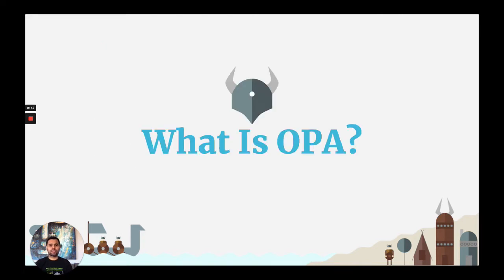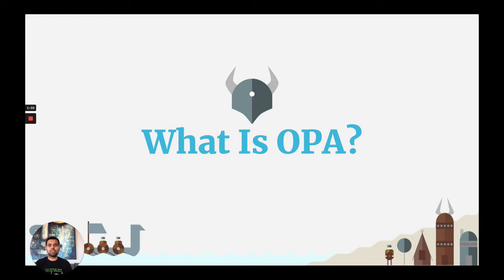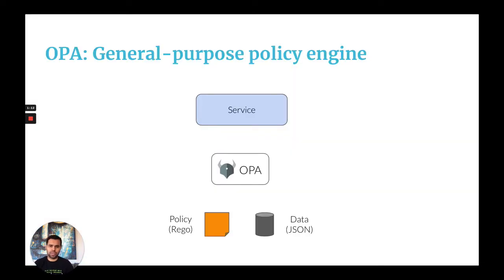What is OPA? OPA, which is the Open Policy Agent, is an open-source general-purpose policy engine. When you use OPA, you are decoupling the policy enforcement from the policy decision-making, so your services can now offload policy decisions to OPA by executing a query. So let's understand this a bit more using this figure.